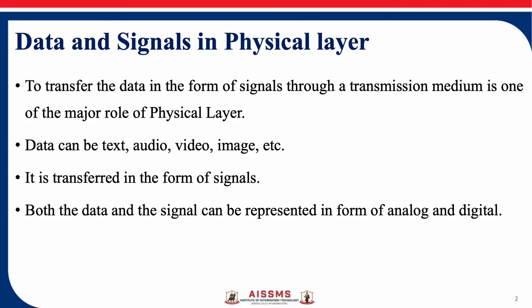In computer networks, one of the major roles of the physical layer is to transfer data in the form of signals through a transmission medium. It doesn't matter what data you are sending — it can be text, audio, image, video, etc. — everything is transferred in the form of signals. This happens because data cannot be sent as it is over a transmission medium; it must be converted to a form that is acceptable by the transmission medium. Signals are what a transmission medium carries.